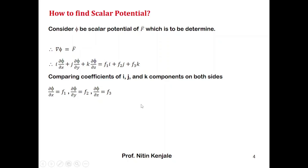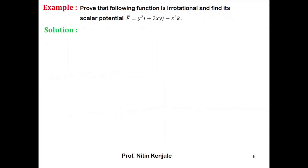Now we have three equations in phi; integrating these will give the required scalar potential phi. Let us see an example: we are asked to prove that the following function f bar is irrotational and find its scalar potential, where f bar is given by y²·i plus 2xy·j minus z²·k.